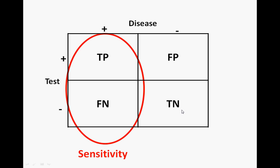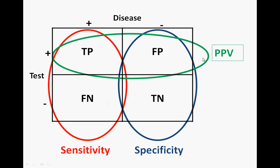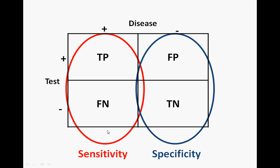Now put a circle around the right side — false positive and true negative — and you get specificity. Sensitivity is the left vertical column; specificity is the right vertical column. The true value there is true negative, so put that on top: true negative over true negative plus false positive. It is really late so I think I'm messing up my words, but it makes sense.